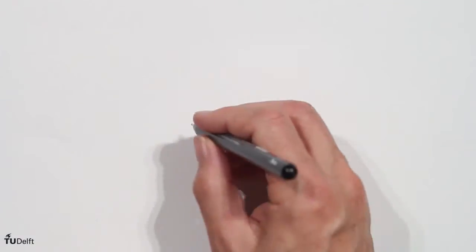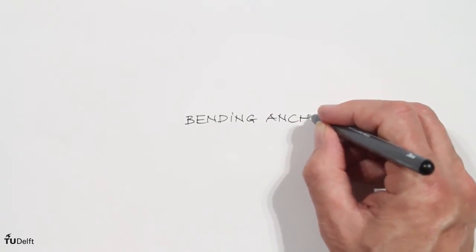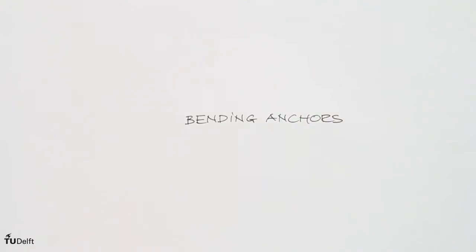The other group is formed by anchors that can bend. These are not pure rollers, but they are more like a spring, because they come back in the original position.